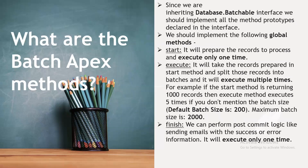What are the Batch Apex methods? Since Database.Batchable is an interface, we must implement all method prototypes declared in that interface. There are three methods: the start method, the execute method, and the finish method. The start method prepares the records to process and executes only one time. The execute method takes the records prepared in the start method, splits them into batches, and executes multiple times. For example, if the start method returns 1,000 records, the execute method runs five times.